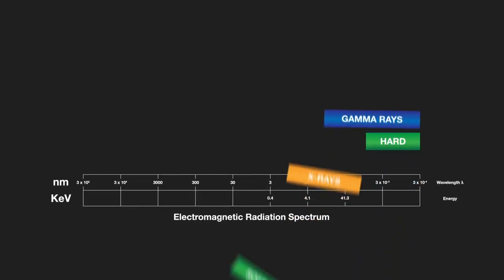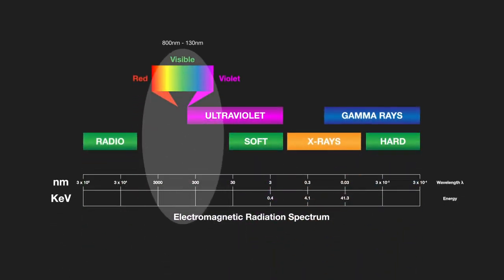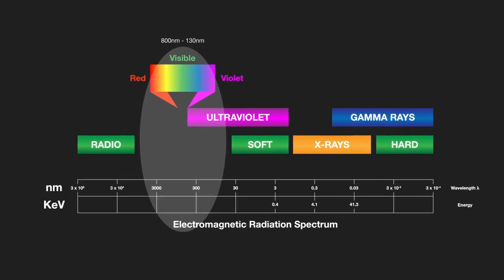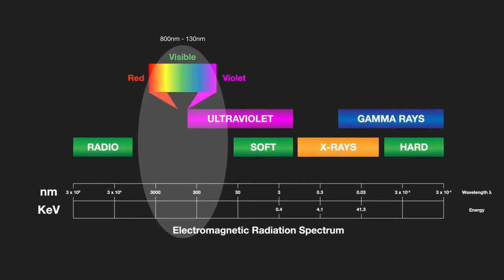The part of the electromagnetic spectrum which is used by OES includes the visible spectrum and part of the ultraviolet spectrum. In terms of wavelengths, that's from 130 nanometers up to around 800 nanometers.